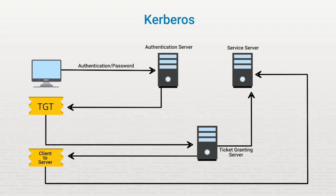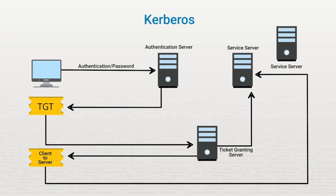The user shows this client-to-server ticket to the service server, and the service server allows access. So the general process is: the user authenticates to the authentication server and gets a ticket-granting ticket; the ticket-granting ticket is shown to the ticket-granting server, which issues a client-to-server ticket; and the client-to-server ticket is shown to the service server, which allows access. The benefit is that when a user needs to access a separate service, they don't go through the entire authentication process again — they simply take the still-valid ticket-granting ticket and submit it to the ticket-granting server to obtain a different client-to-server ticket for the other service.